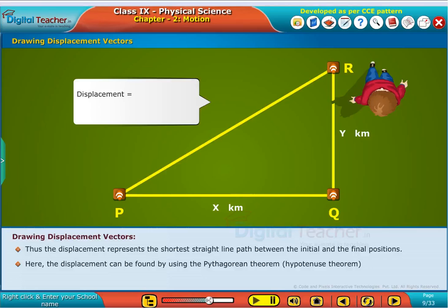Here, the displacement can be found by using the Pythagorean theorem or Hypotenuse theorem. Displacement is a vector quantity and it can be positive or negative or zero.